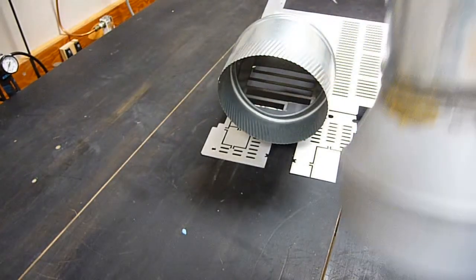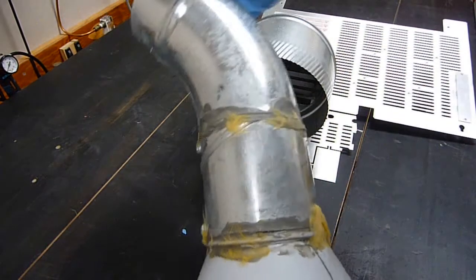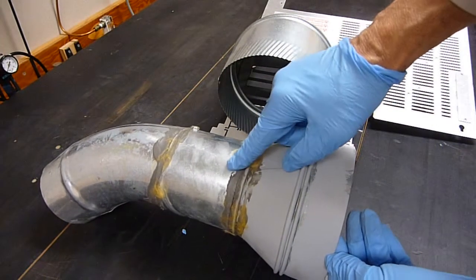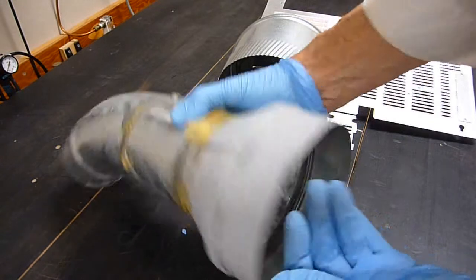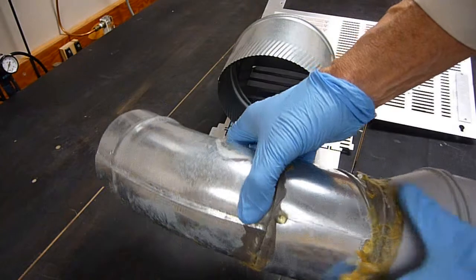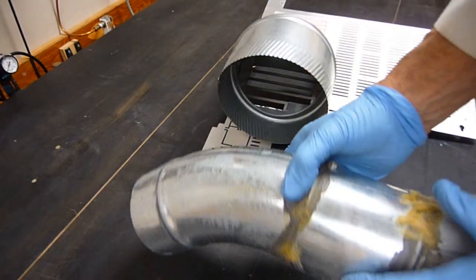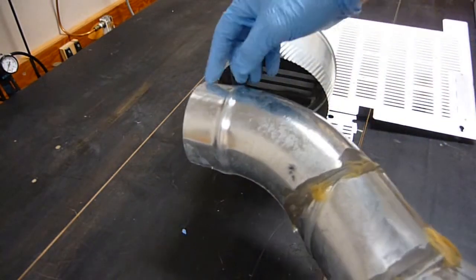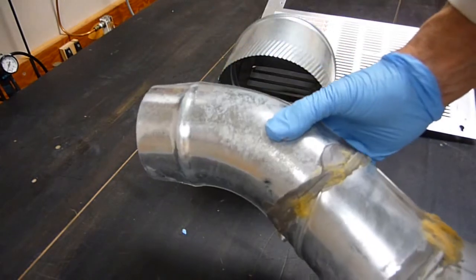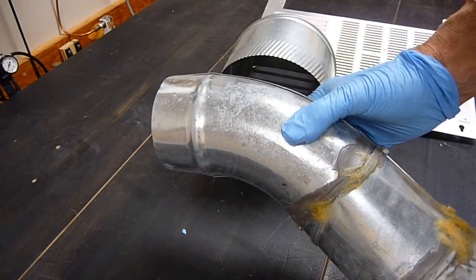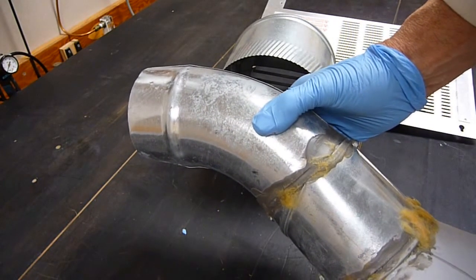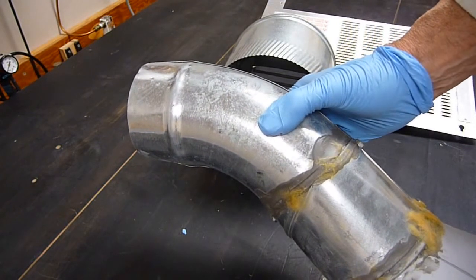And then, this is the six inch to four inch adapter. Also commonly available. Anyone says six by four. And then, this is a four inch 45 degree elbow. Commonly available. And so, you'll see this as we, once we get hooked up again to the HVAC system.